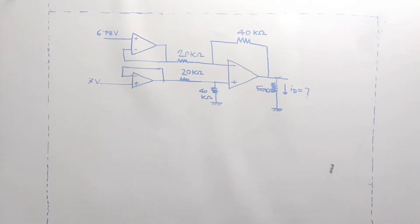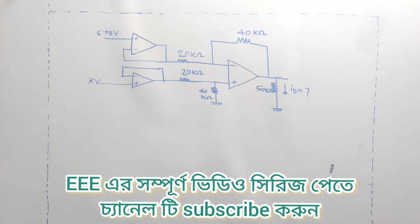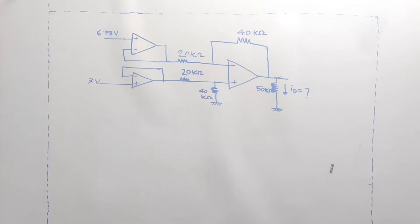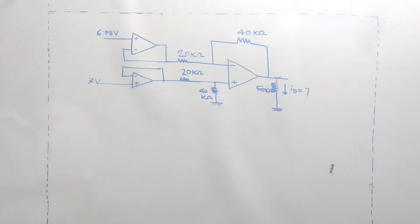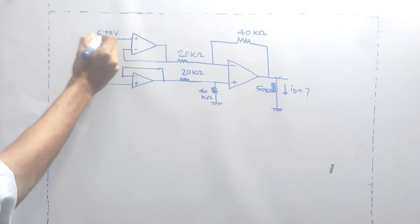In this video, I will solve some advanced problems. I will reference the previous video and use its formulas here. The plus front voltage is 6.98V.